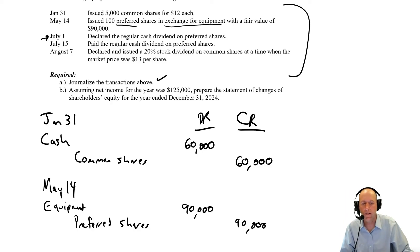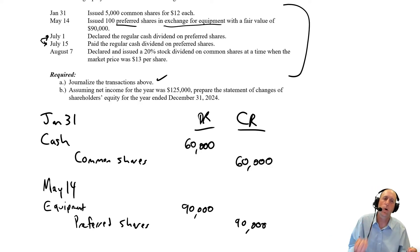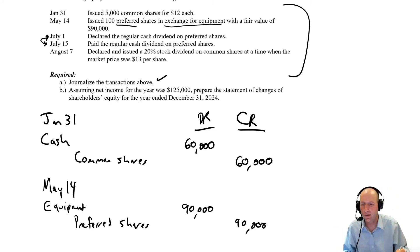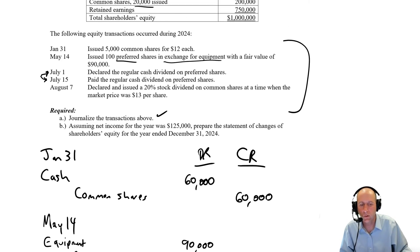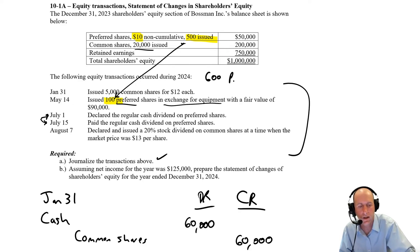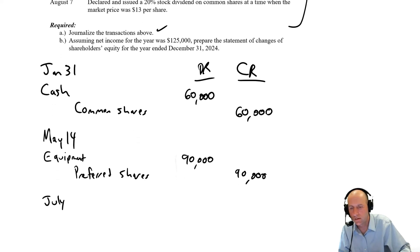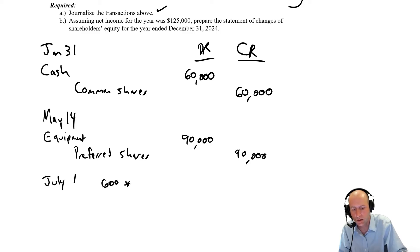July 1st: declared the regular cash dividend on preferred shares, to be paid July 15th. This is more typical — declaration and payment on separate dates. On declaration, the company legally obligates itself to pay. We had 500 preferred shares originally plus the 100 just issued, so 600 preferred shares outstanding. At $10 per share, that's 600 times $10 equals $6,000 in dividends promised.